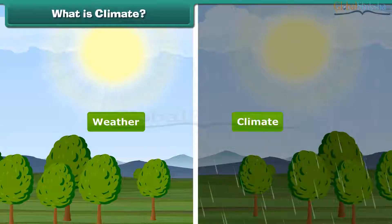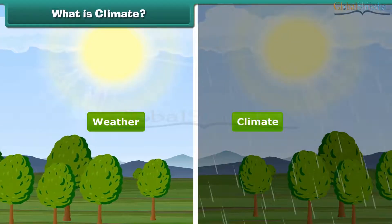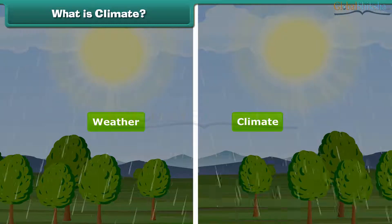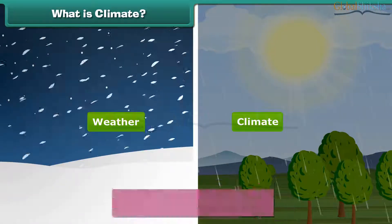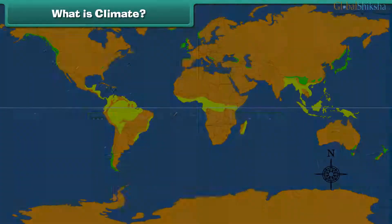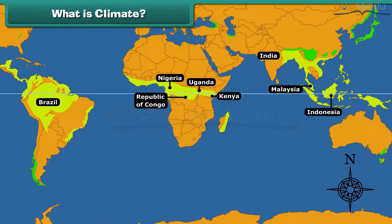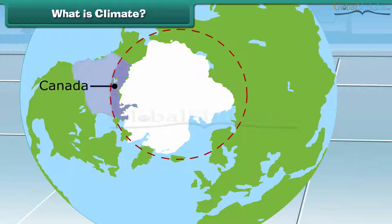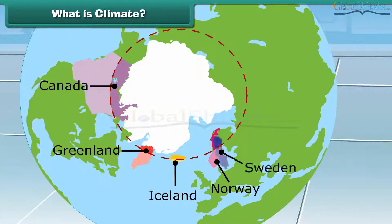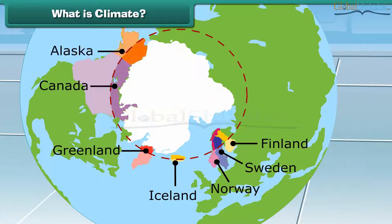Is weather and climate the same? No. A region's long-term weather patterns determine climate. For example, areas near the equator have a warm climate, and the areas near the poles have a much colder climate. So children, now you can easily differentiate weather from climate.